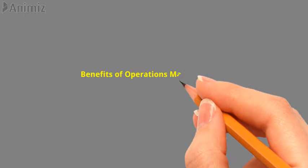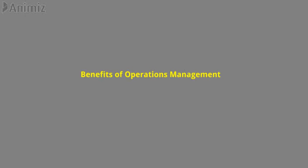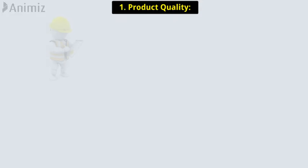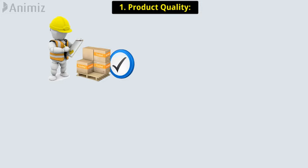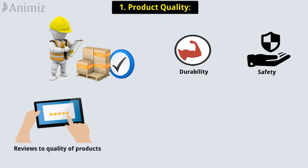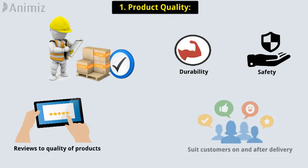Now come to benefits of operations management. 1. Product Quality. Operations management staff is the first crew in a company that verifies durability and safety in a product. Operations management reviews the quality of products that would suit customers on and after delivery.